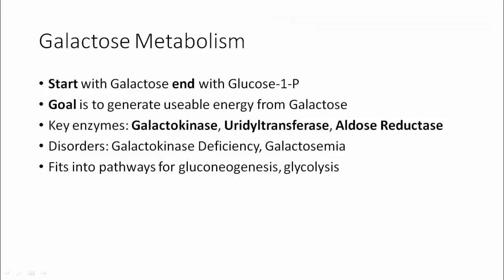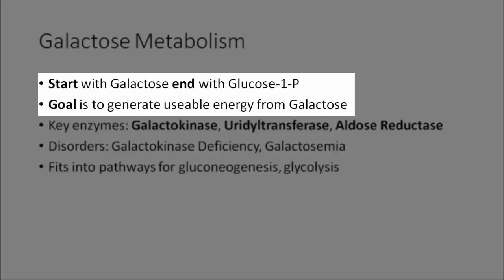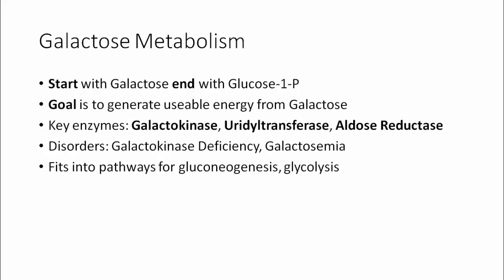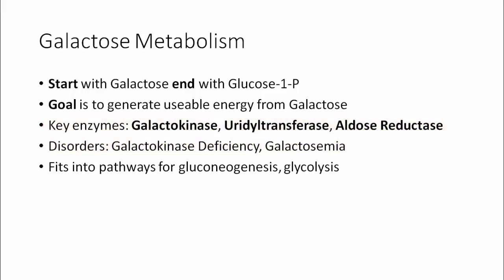Highlighting the key elements of galactose metabolism: our starting product is galactose, and we end with glucose-1-phosphate. The overall goal is to generate usable energy from a dietary source of sugar, namely galactose. The key enzymes to remember are galactokinase, uridyl transferase, and aldose reductase. Key disorders associated with this pathway are galactokinase deficiency and galactosemia. This pathway fits more broadly into pathways for gluconeogenesis and glycolysis.